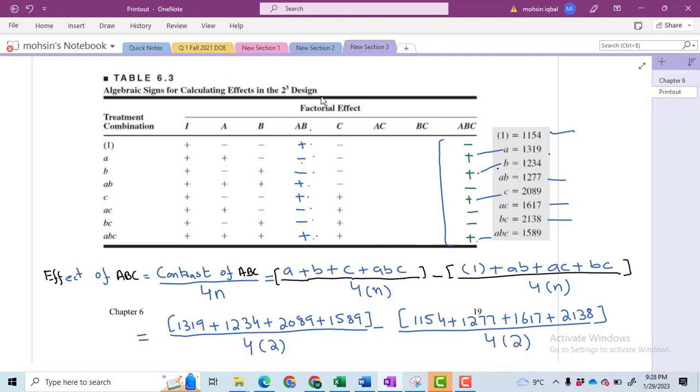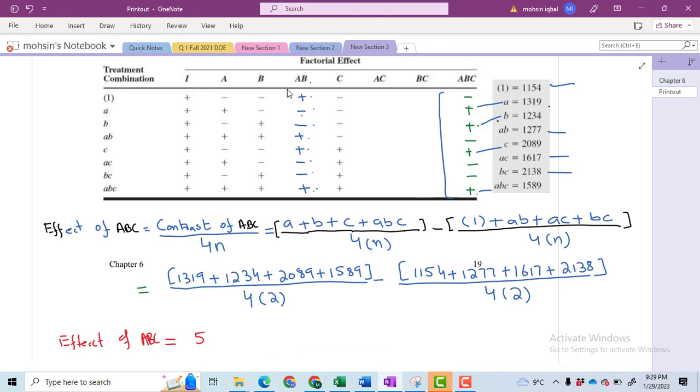And upon solving in the calculator, I will get 5.625. I suggest people to either use the Minitab or do these computations in the calculator to get the exact answer.